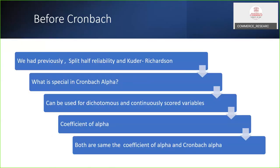Cronbach developed in 1952. Before that, we had previously used split-half reliability and CUDA Richardson reliability. But after the development of Cronbach alpha, social science researchers popularly used Cronbach alpha for testing the reliability of scales. It can be used for dichotomous and continuously scored variables. That is a plus point of Cronbach alpha as compared to the other reliability tools.